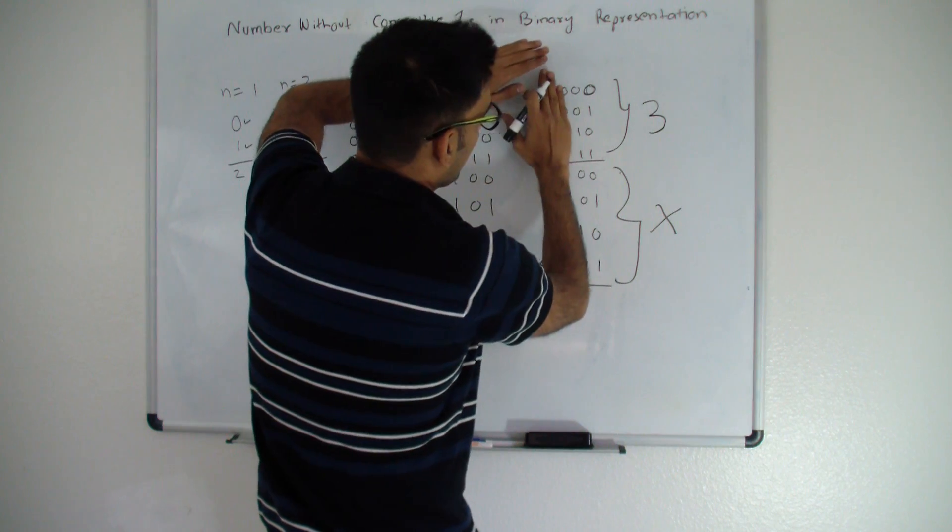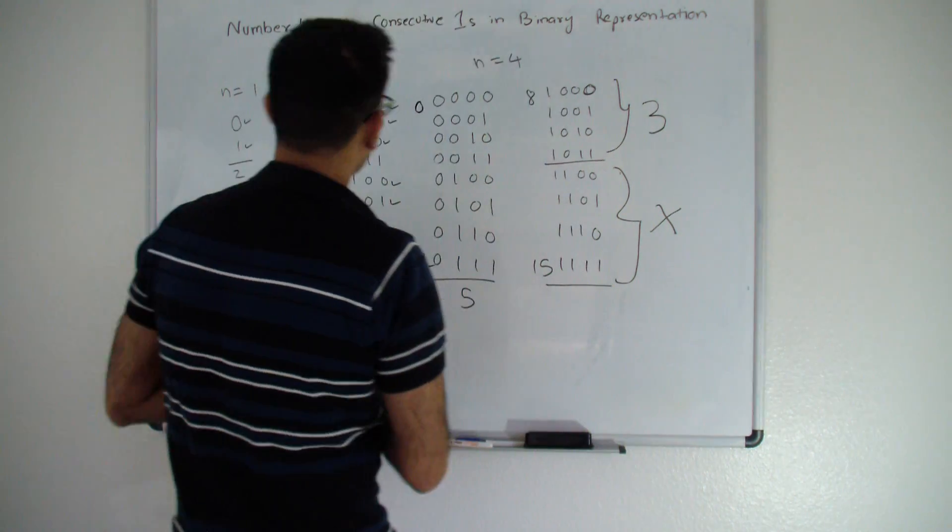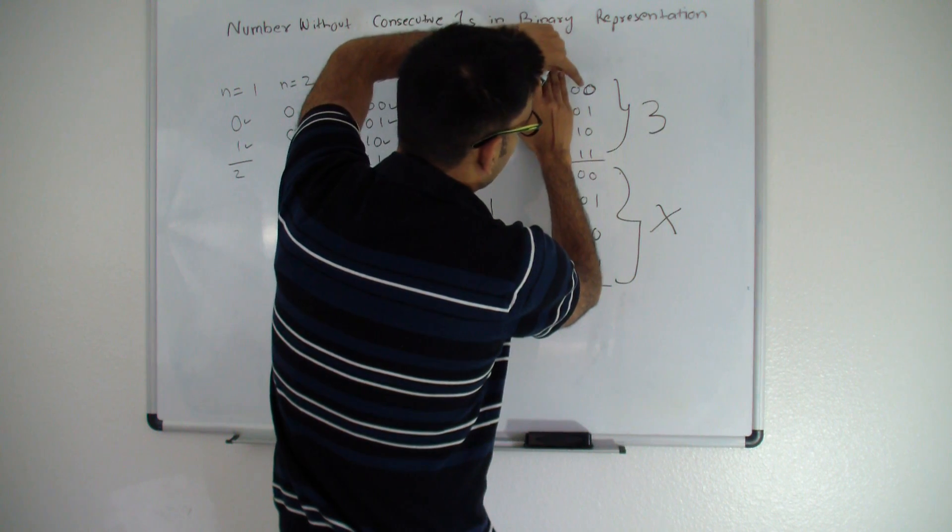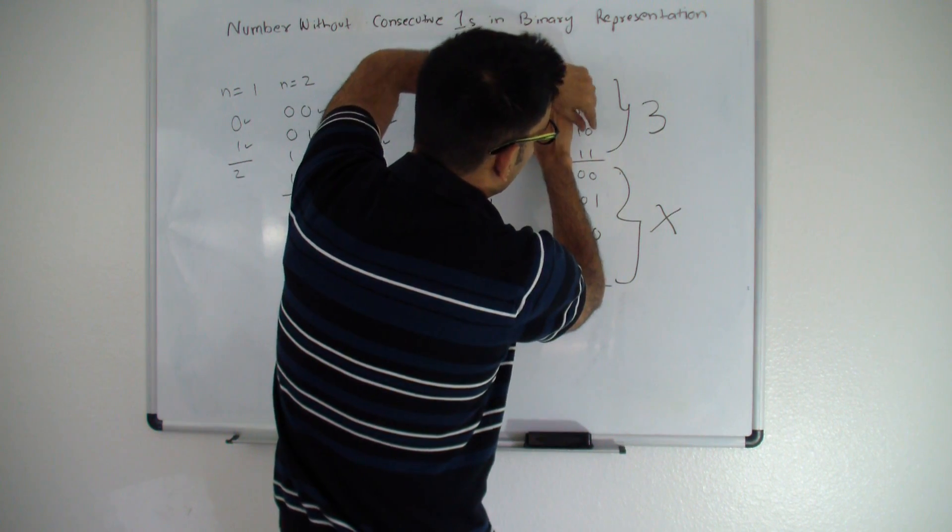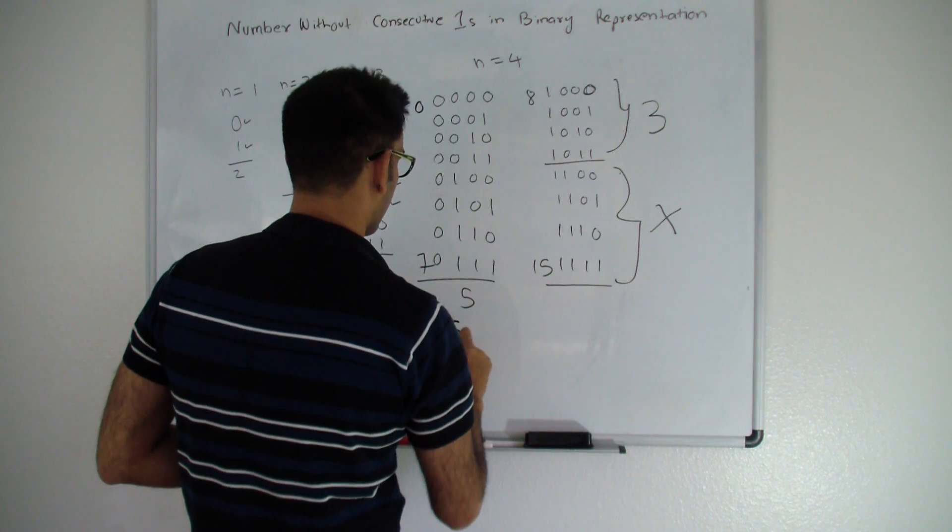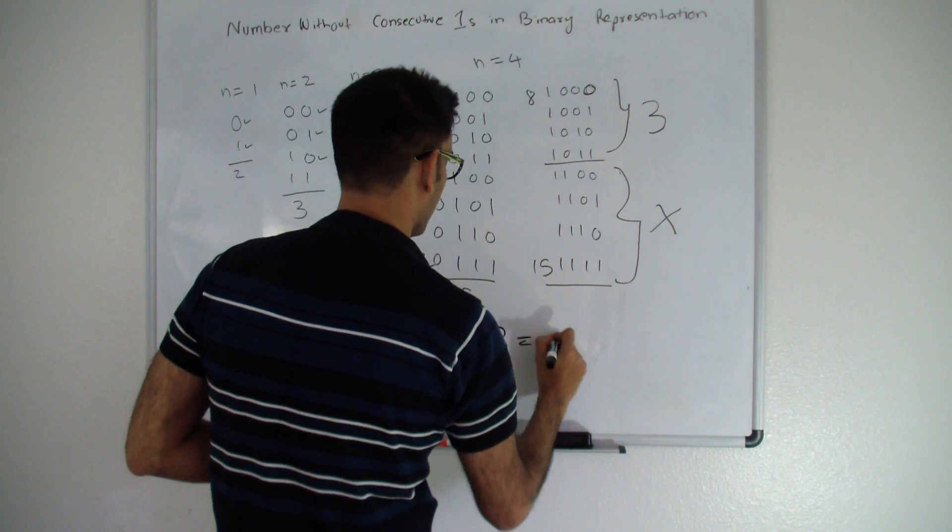So here we are looking at the total number of numbers who do not have consecutive 1's, will be what we already calculated for 0,0,0 to 1,1,0. Which is this. So the total for n equals 4 will be 5 plus 3 equals 8.